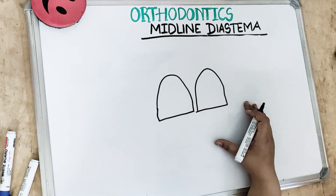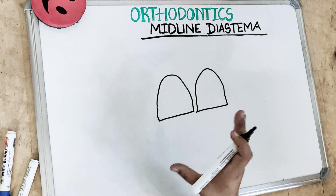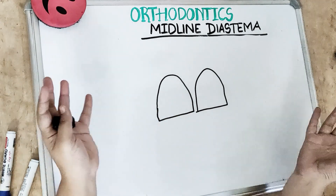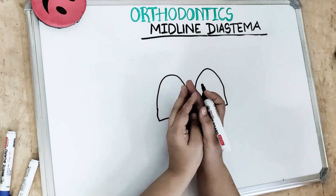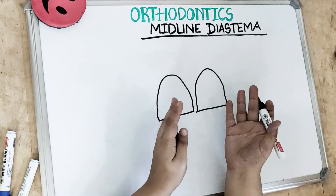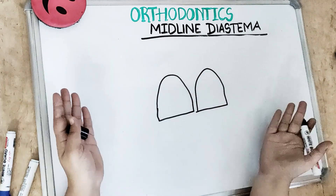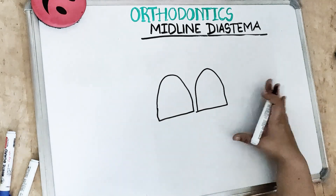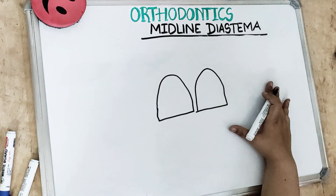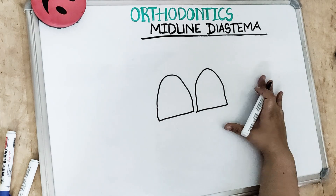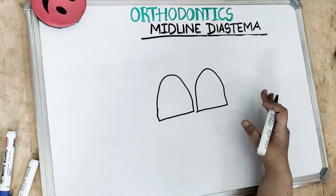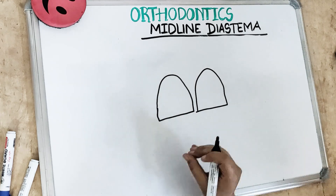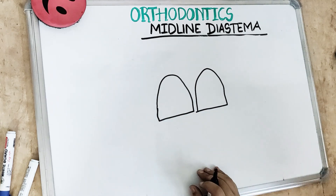This malocclusion is easy to treat but difficult to retain, because once you do the ortho treatment, the space comes back again. After you have closed the midline diastema, after about 2 years, the space opens up automatically. In today's video, we'll read the causes of midline diastema, how to treat it, and most importantly, how to retain it. So let's get started.